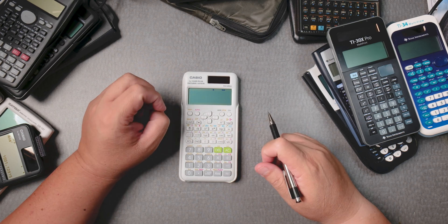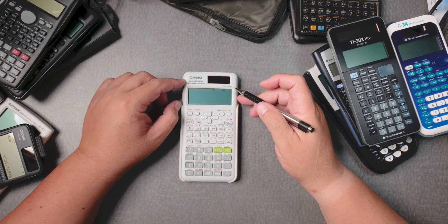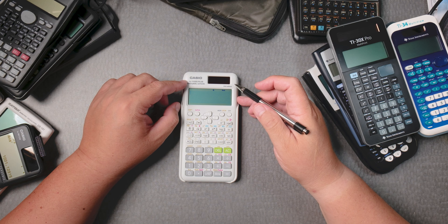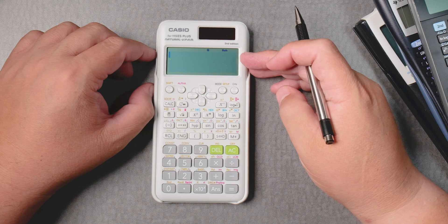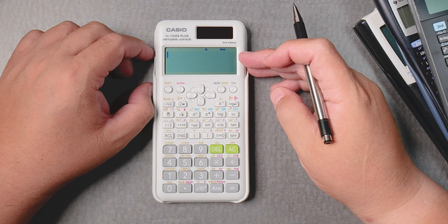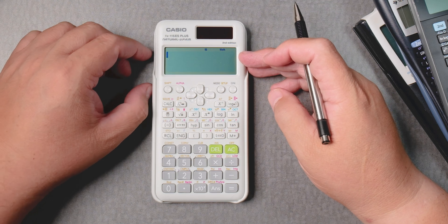Hi, everyone. Let's do fractions on the Casio FX115ES Plus natural VPAM. So let's say you wanted to add half plus 3 over 4.